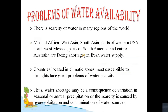There is scarcity of water in many regions of the world. Most of Africa, west Asia, south Asia, parts of western USA, northwest Mexico, parts of south America, and entire Australia are facing shortages in fresh water supply. Countries located in climatic zones more susceptible to drought face great problems. Drought is a prolonged period of abnormally low rainfall leading to a shortage of water — the opposite of flood. Water shortage may be a consequence of variation in seasonal or annual precipitation, or caused by over-exploitation and contamination of water sources.